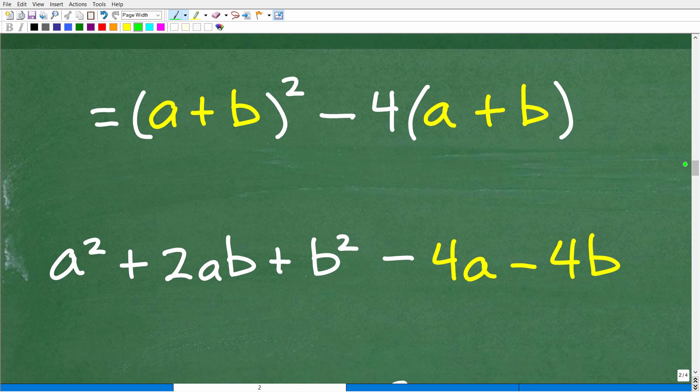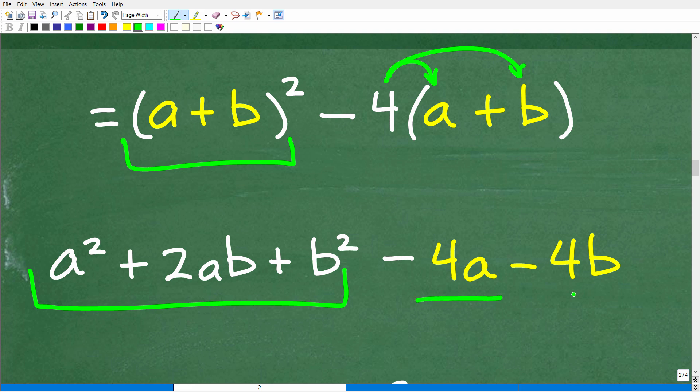So we did this part of the problem, and that's probably the hardest part. Now we have to go ahead and simplify this part of the function right here. So this is -4 times (a + b). All we have to do is take this -4 and multiply it by a and multiply it by b. So we're going to have -4a and -4b.